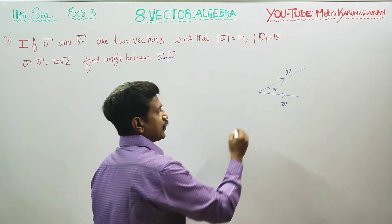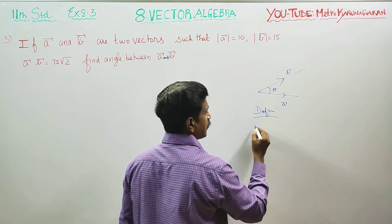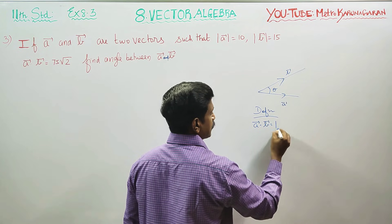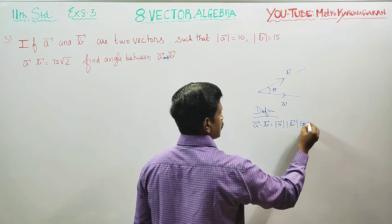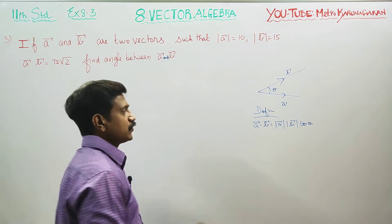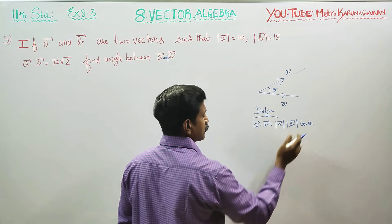What is the definition of A dot B? A vector dot B vector equals magnitude of A times magnitude of B times cos theta. This is the definition of A dot B.